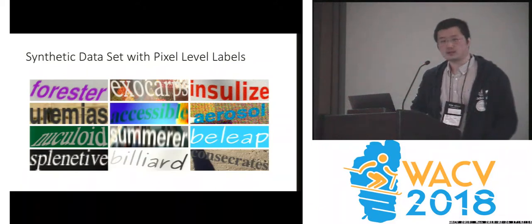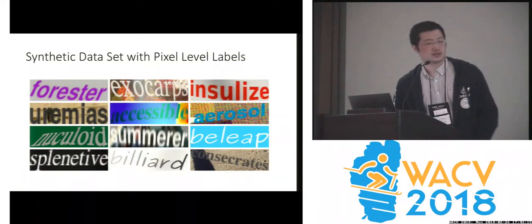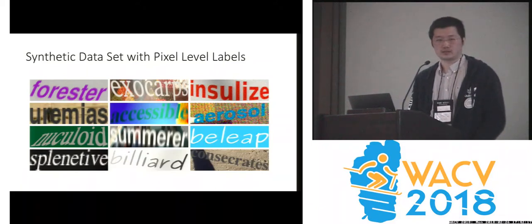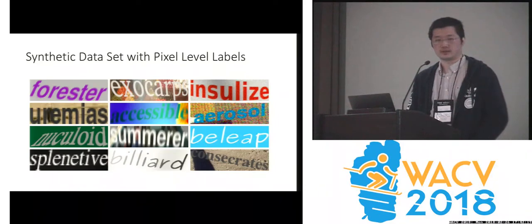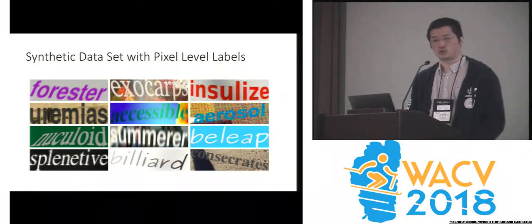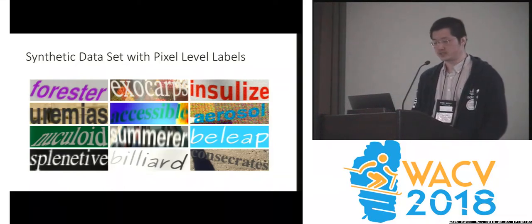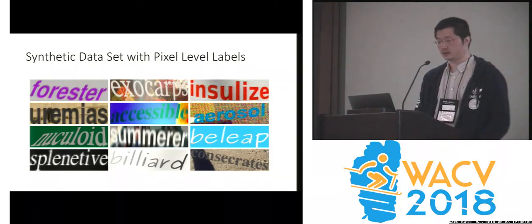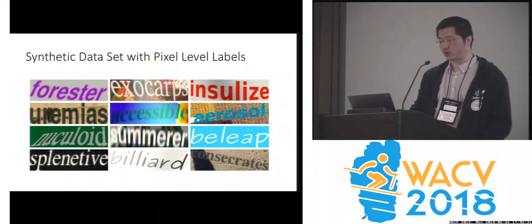To train a large network, we need a large amount of data. Unfortunately, there is no large-scale text dataset with pixel-wise ground truth available. So in this work, we use a synthetic large-scale dataset with pixel-level labels, and the network is trained on the synthetic data only.